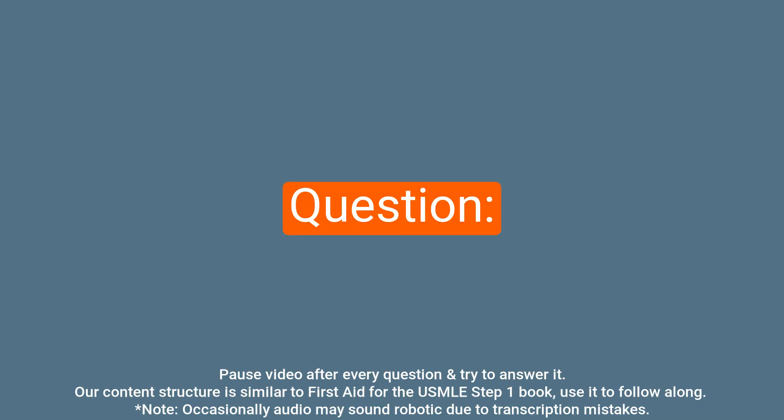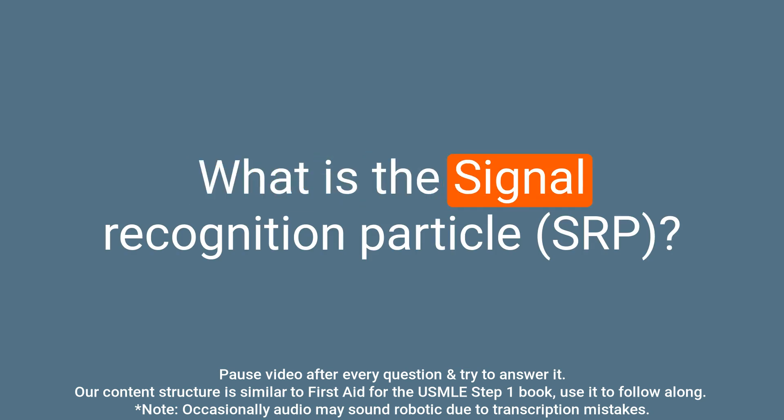This is USMLE QA — USMLE material presented in a question and answer format structured similar to the First Aid for the USMLE Step 1 book. Question: What is the signal recognition particle?